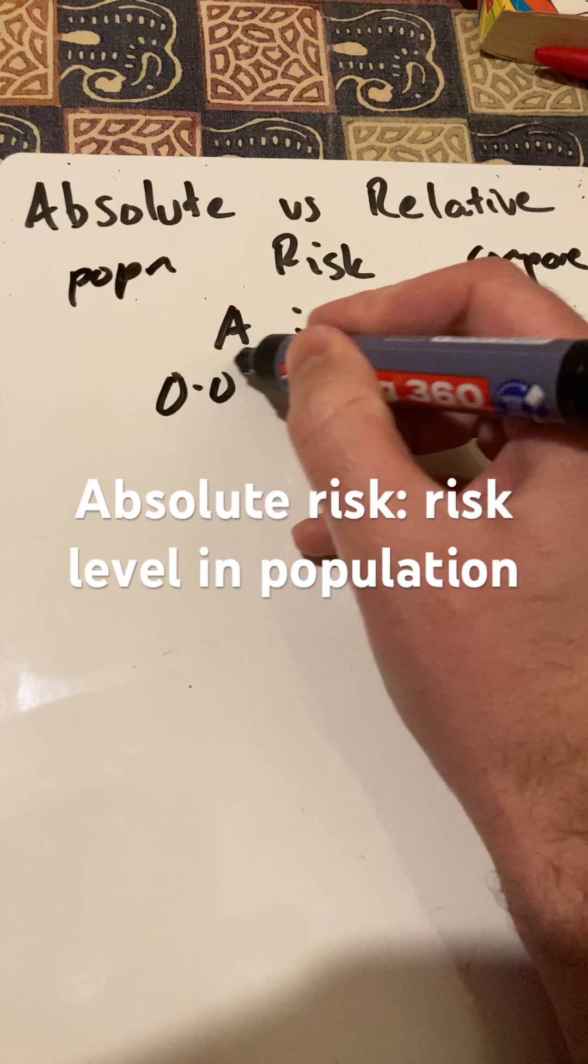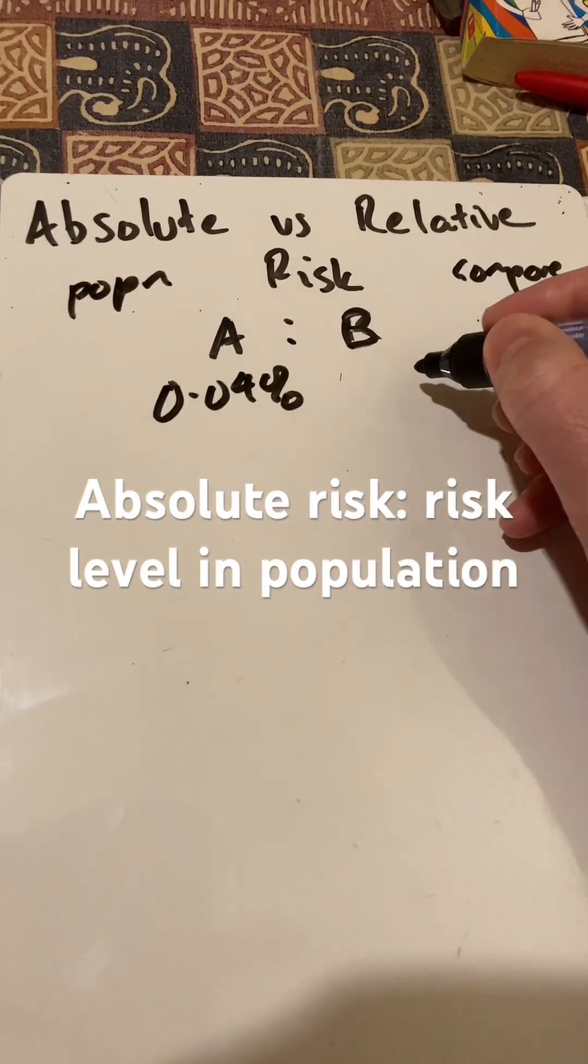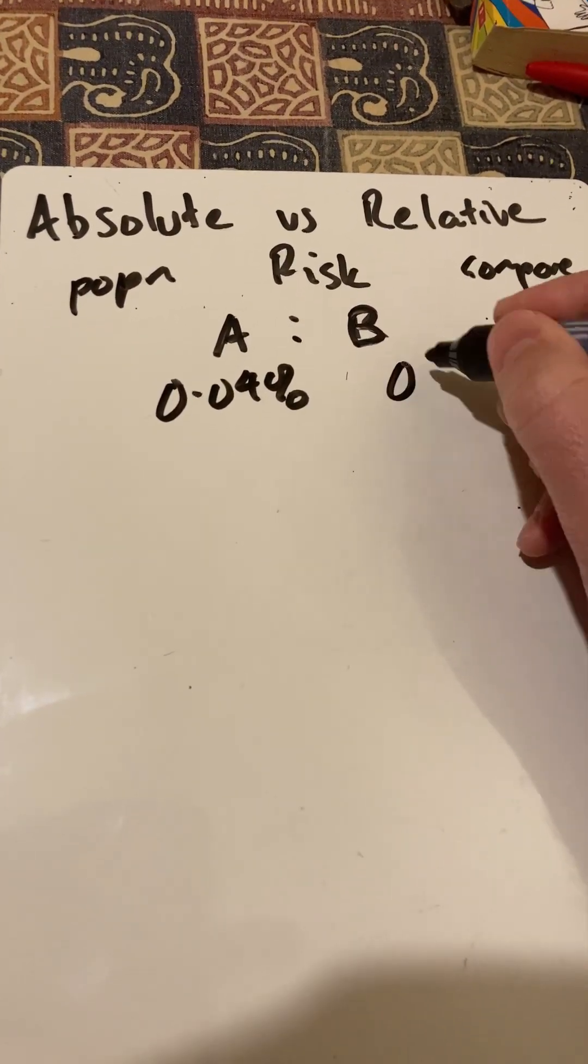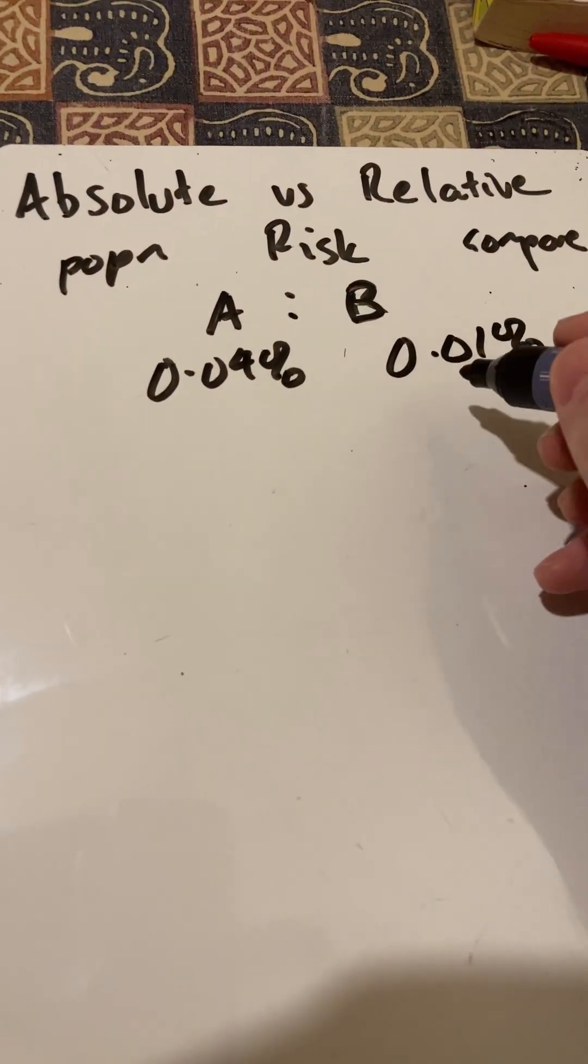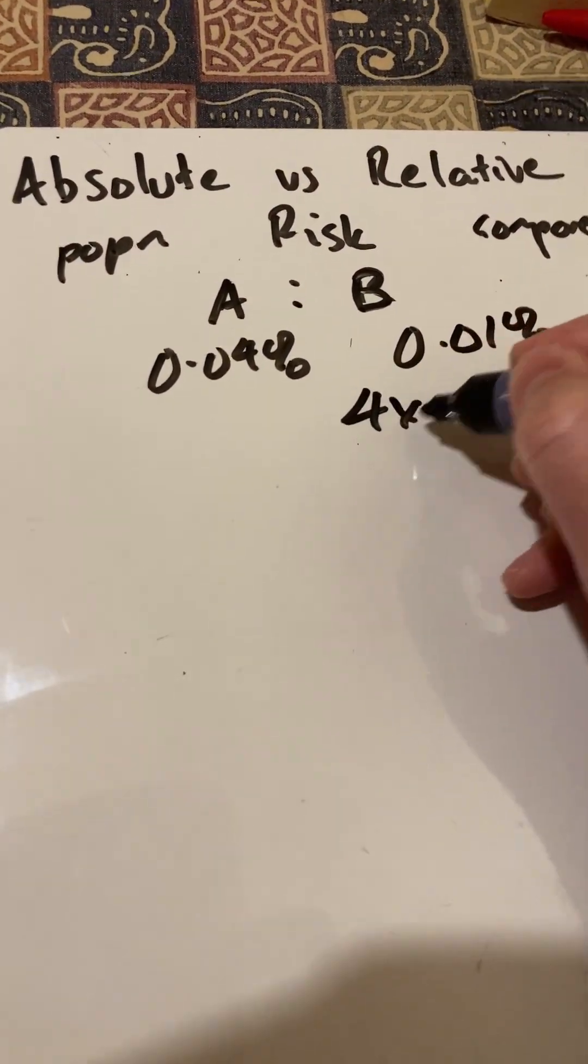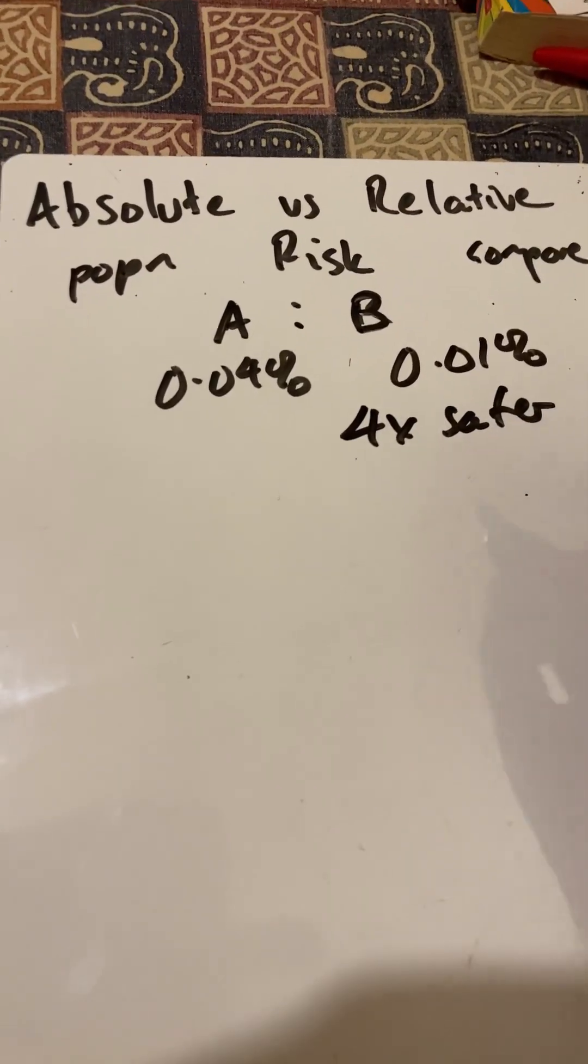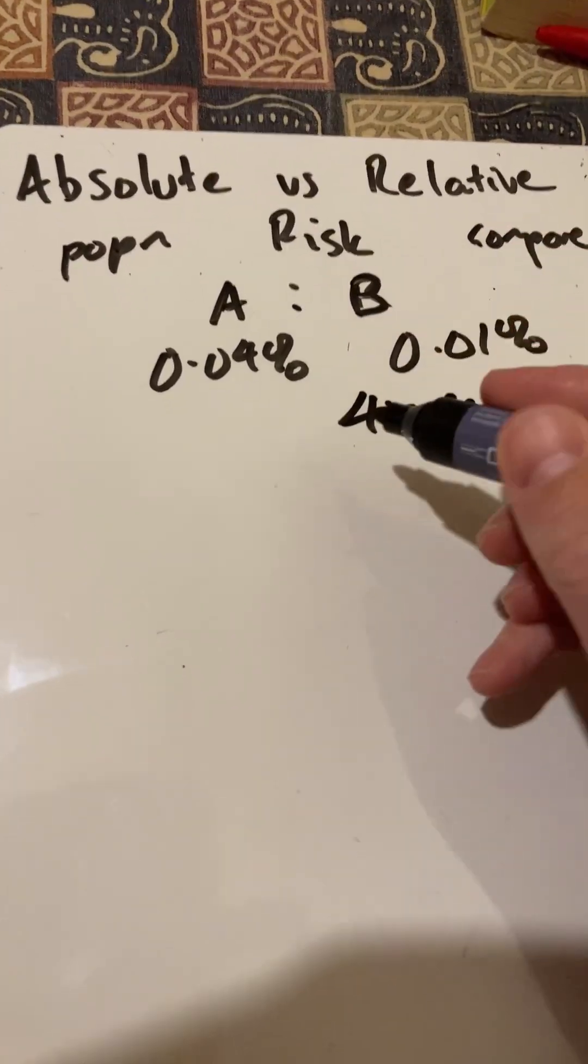Say A has a 0.04% risk of injury to its workers and B has 0.01% risk of injury. If we compare them relatively, B is four times safer, but in absolute terms, in terms of the number of injuries...